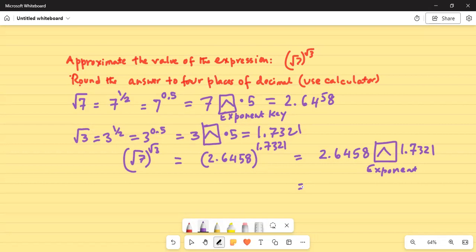And the answer is 5.394. So square root of 7 exponentiated square root of 3 is 5.394. This is your final answer.